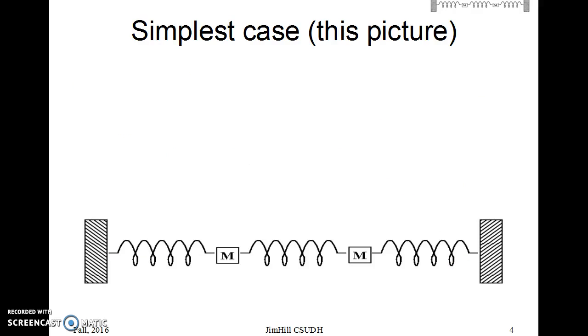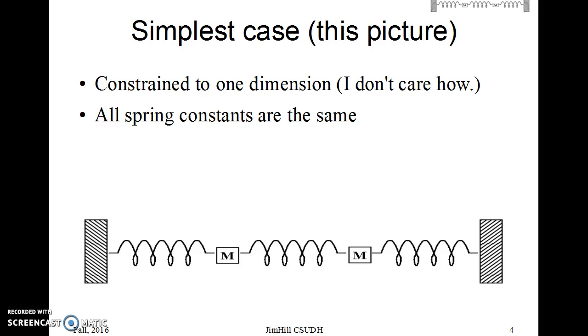In this case, here's the picture. It's constrained to one dimension, and every once in a while in class somebody will ask how does that happen? I don't care. This is a mathematical model in some sense. All the spring constants are the same. That is, each spring is of the same type. The masses are the same, because I wanted to make this the simplest case.